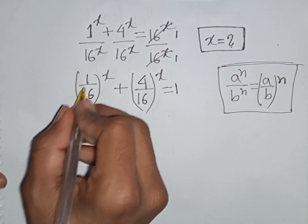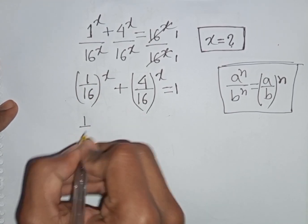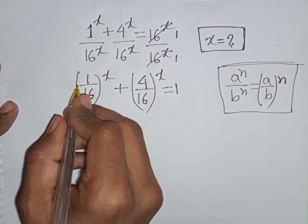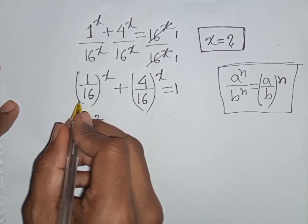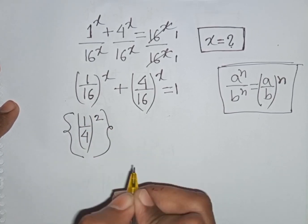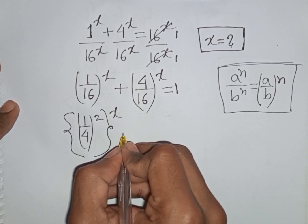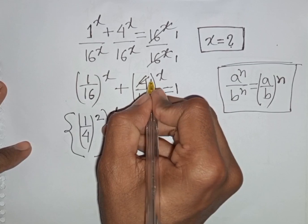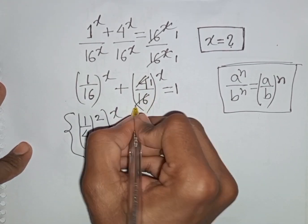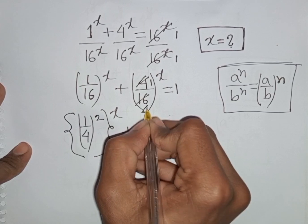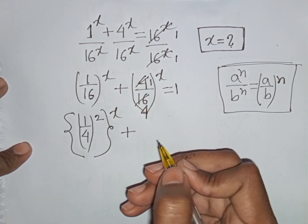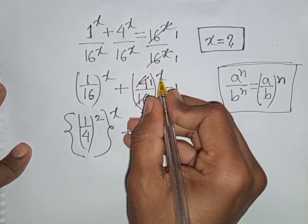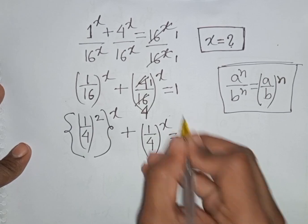Now 1/16 can be written as (1/4)². Since 1² = 1 and 4² = 16, the first bracket can be rewritten as (1/4)^(2x). And 4 divided by 16 equals 1/4, so the equation becomes (1/4)^(2x) + (1/4)^x = 1.